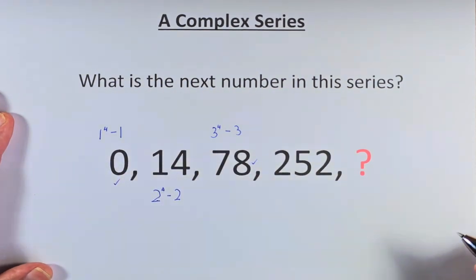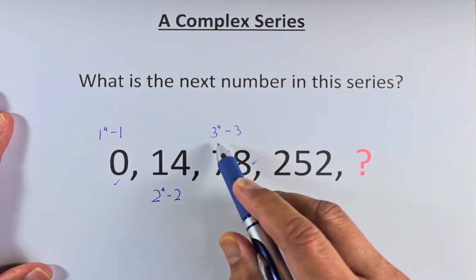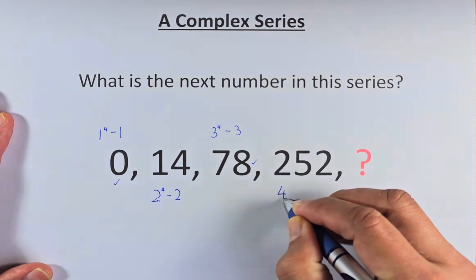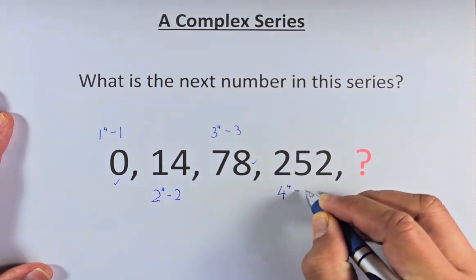And then we are going to go to 252. By now we should know the pattern. 1, 2, 3 minus 1, 2, 3. So it's going to be 4 to the power of 4 minus 4.